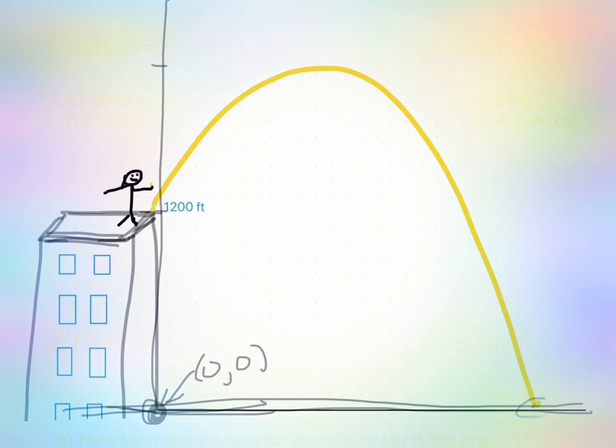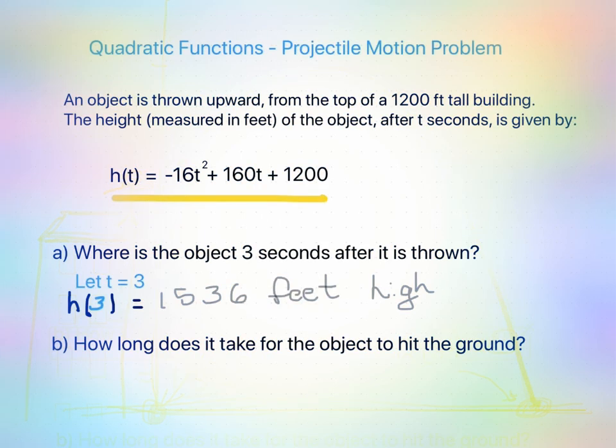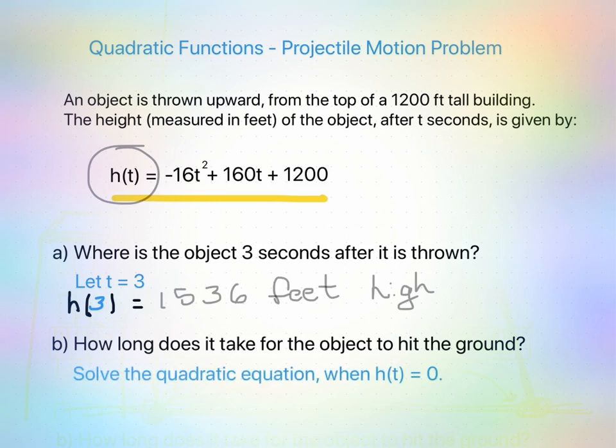And so here, where the ball lands on the ground, this would be where the height h of t would equal zero. So what we can do in our equation, let's go back to the page, is we can take h of t, we can take this and replace it with zero, kind of like letting y equal zero to find the x-intercept.